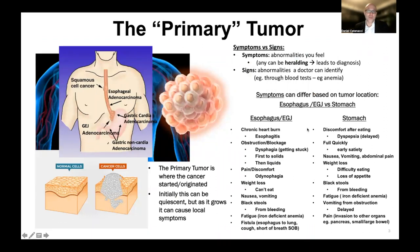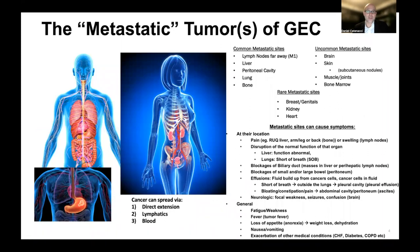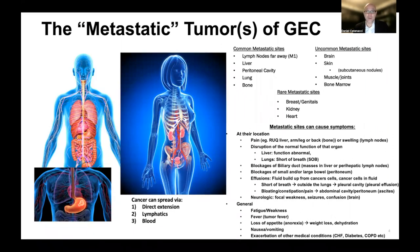We also talked about in the setting of stage four cancer, the number of places that this cancer can spread to — some common places, less common places — and that these can cause symptoms at their location as well as generalized symptoms. These symptoms can herald the metastatic or primary tumor site leading to diagnosis, and they can continue to occur throughout the duration of your treatment journey.